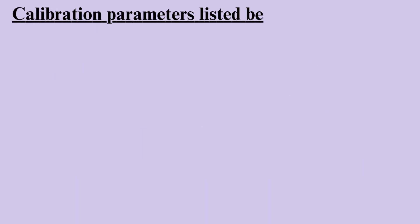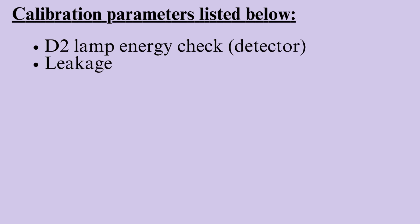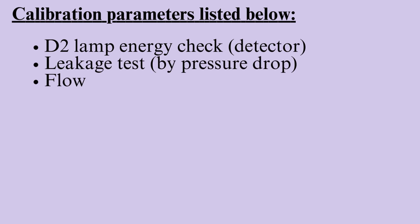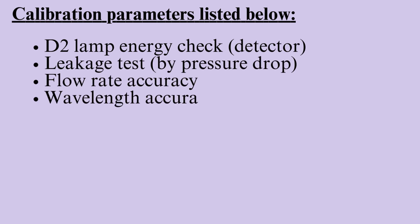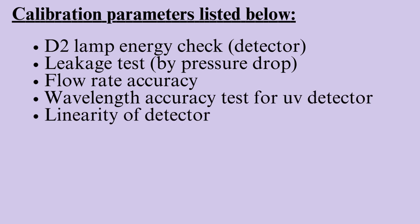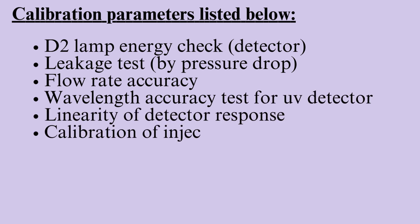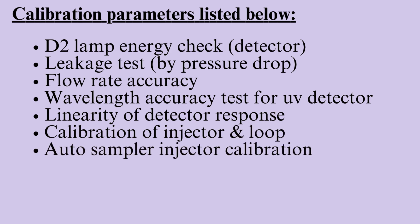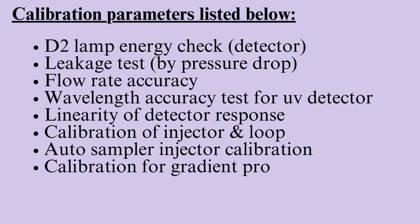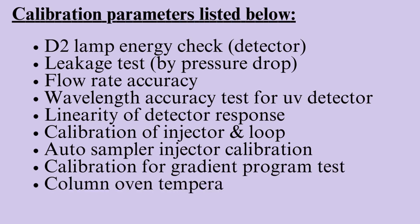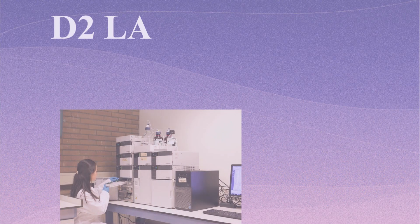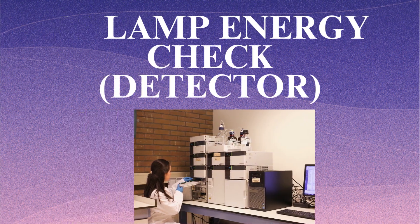Calibration parameters listed below: D2 lamp energy check, detector leakage test by pressure drop, flow rate accuracy, wavelength accuracy test for UV detector, linearity of detector response, calibration of injector loop, auto sampler injector calibration, calibration for gradient program test, column oven temperature, carryover test, and D2 lamp energy check detector.